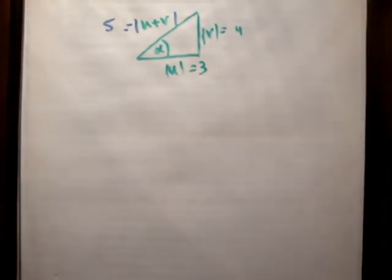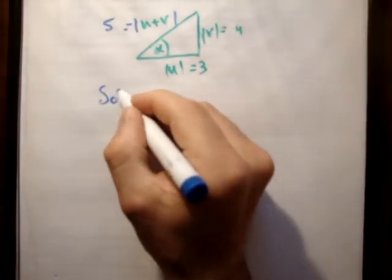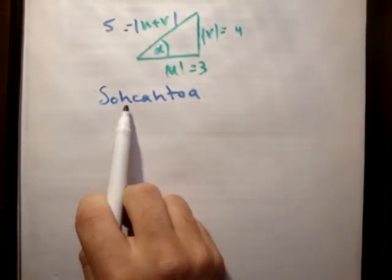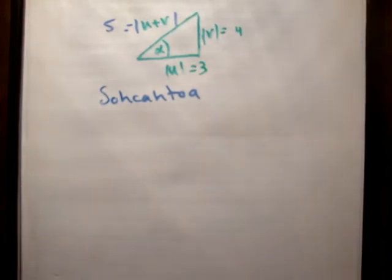If you look at SOHCAHTOA, you can use sine opposite over hypotenuse, cosine adjacent over hypotenuse, or tan opposite over adjacent. You can use any of those in this case to find this, so I'm just going to use tangent for this case.